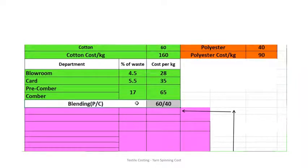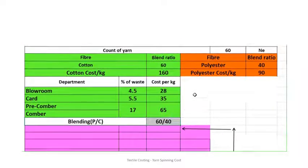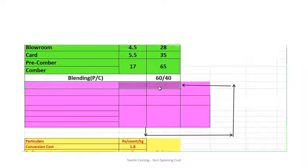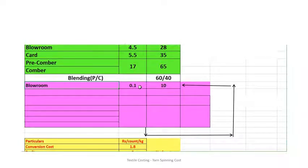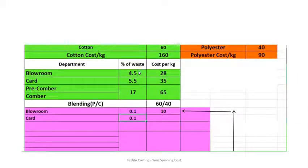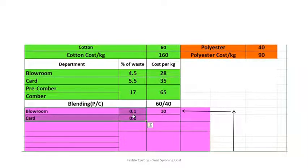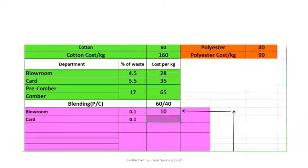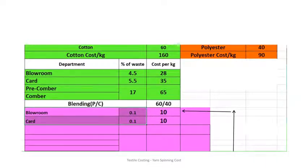For the blended line — polyester-cotton blended at ratio 60:40 — the blow room waste percentage is 0.1% with a waste selling price of 10 rupees, and card waste percentage is also 0.1%. As already noted, the waste percentage is much higher in the cotton line (4.5% and 5.5%) whereas in the blended line it is only 0.1% due to open settings. The waste selling price is also low because polyester is a cheaper material.